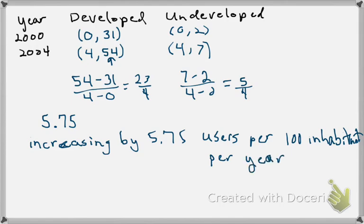So let's think about what this means. Between 2000 and 2004 we found that the number of internet users is increasing. We know it's increasing because this number is positive. We found what it was increasing by which is 5.75. And then the units on that are our output units. So users per 100 inhabitants per our input units which was years.